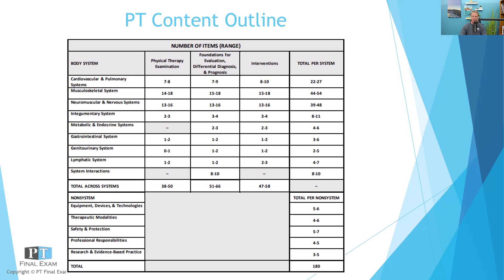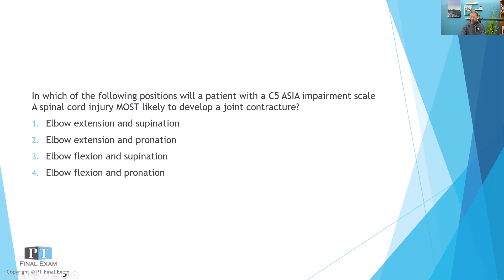All right. Let's go ahead and talk about our practice question today. As per usual, I will read you the question, give you a moment to respond, and then we'll talk about the answer together. In which of the following positions will a patient with a C5 ASIA Impairment Scale A spinal cord injury most likely develop a joint contracture? Option one: elbow extension and supination. Two: elbow extension and pronation. Three: elbow flexion and supination. And four: elbow flexion and pronation.